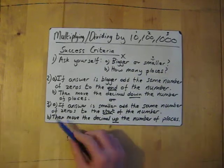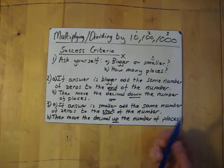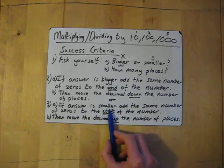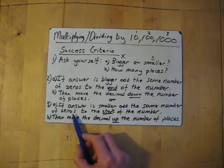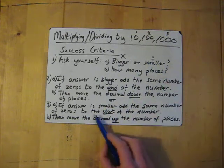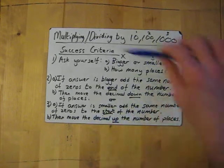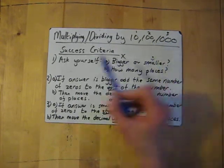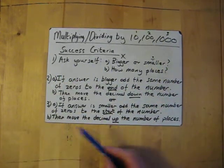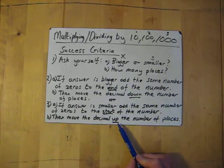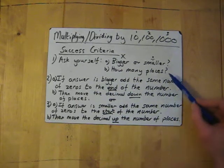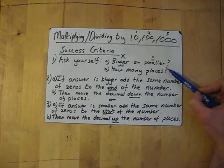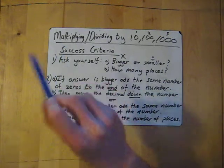For division, it's the reverse of what you've done for multiply. If the answer is smaller — which is divide — then add the same number of zeros to the start of the number. So if it's divided by 100, you'd add two zeros to the start of the number. Then move the decimal point up the number of places. So if it was a thousand, that would be three places — one, two, three.